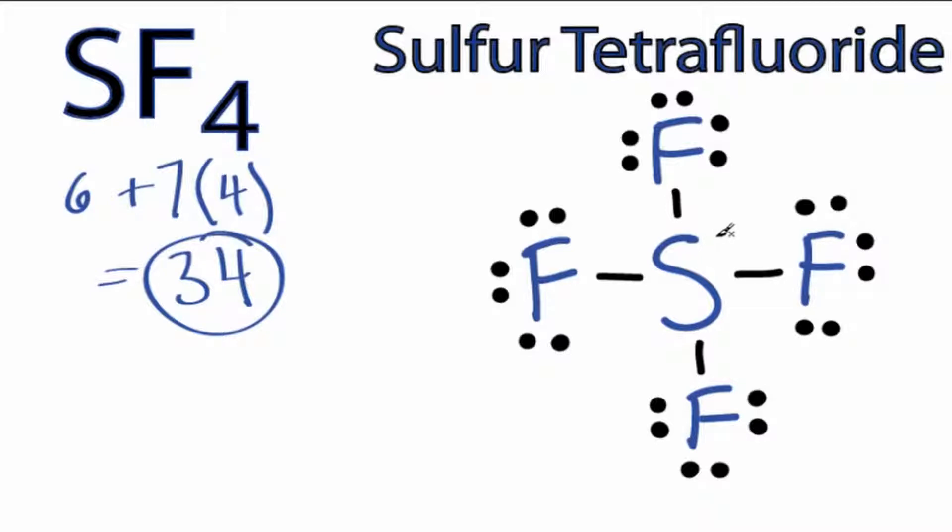But we can put those right here because sulfur is in period 3 and it can have more than 8 valence electrons.